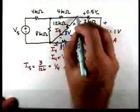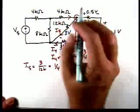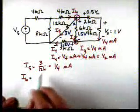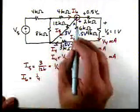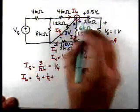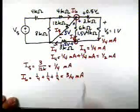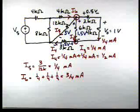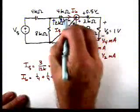So now, if we apply Kirchhoff's current law at this node, we can find this current I6. So I6 is going to be 1 quarter here, 1 quarter here, and then another 1 quarter milliamp. So this is going to be 3 quarters of a milliamp. And that's then going to tell us that the voltage across this resistor is going to be 3 volts.